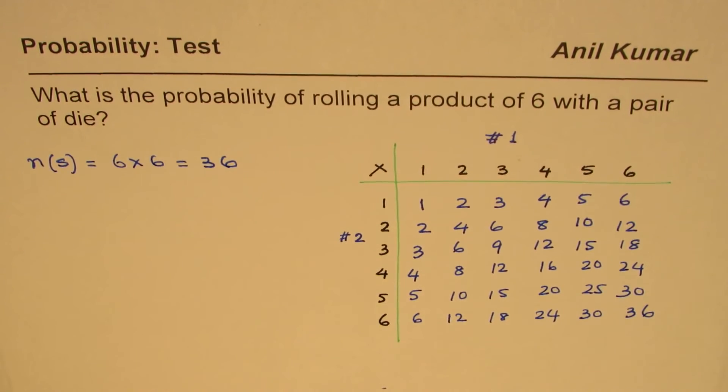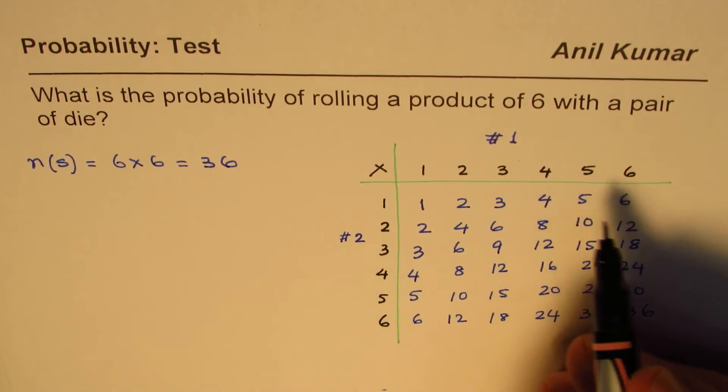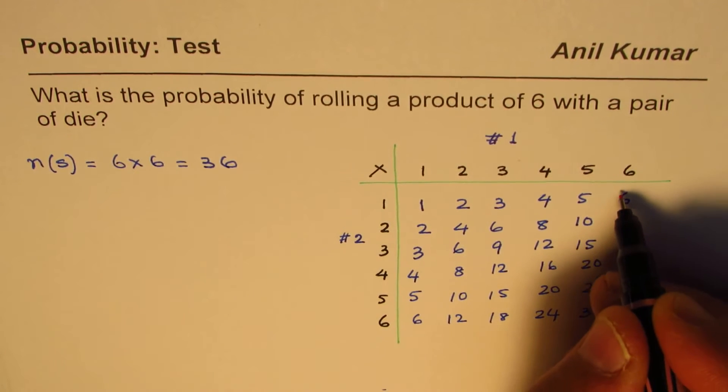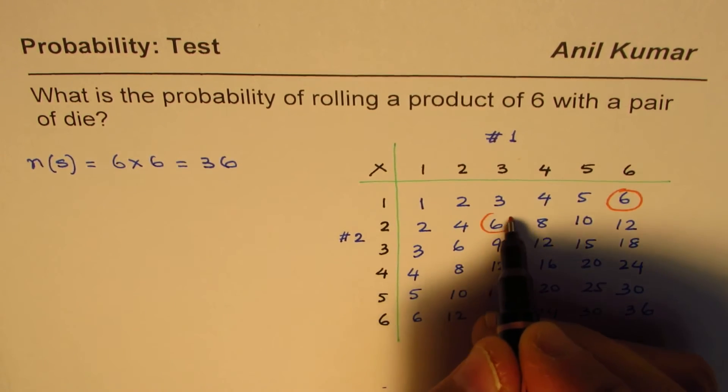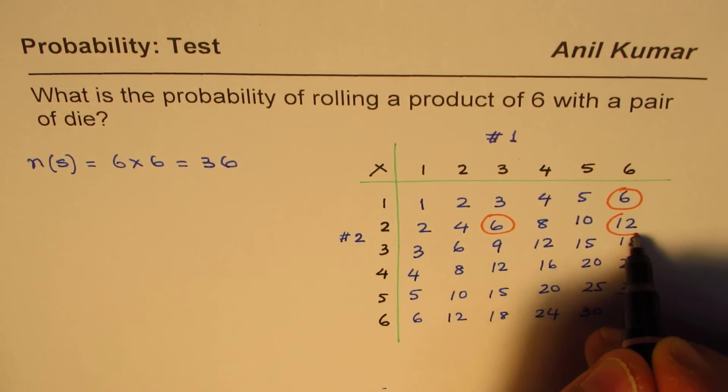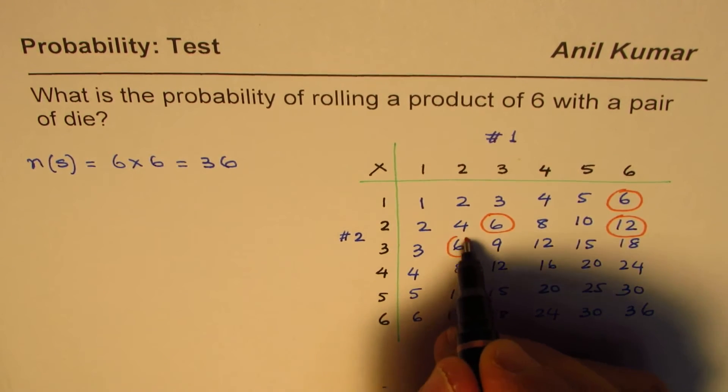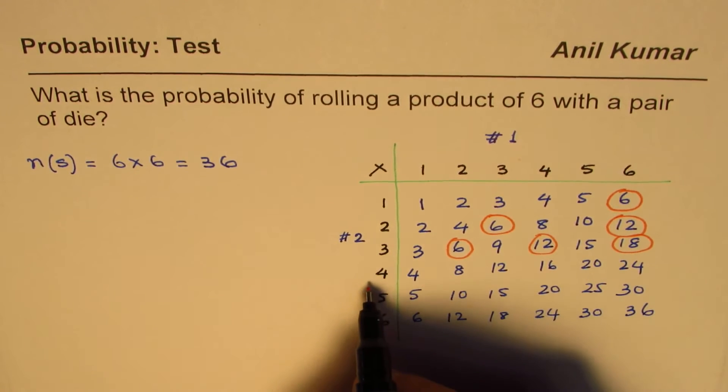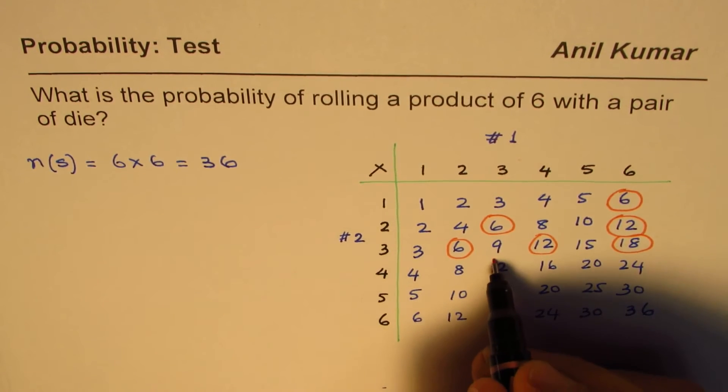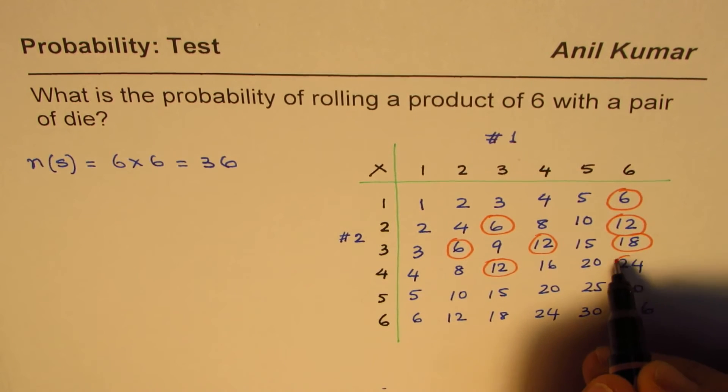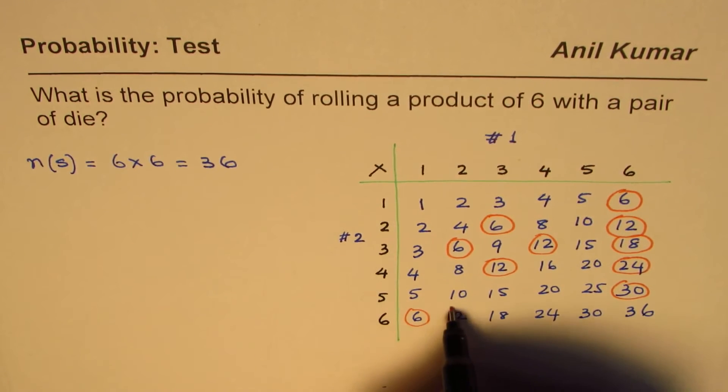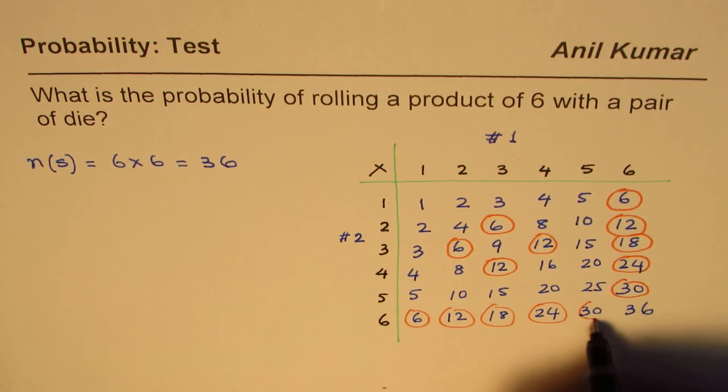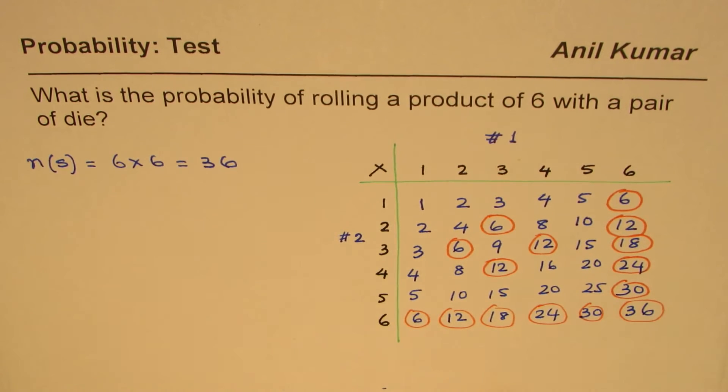Those are the total number of elements. Out of which, how many are products of six? In the first row we have got one product of six. In the second, we have two times three as six and two times six as 12—two of them. In the third one we have six, 12, and 18. In the fourth one, four times three is 12 and four times six is 24. Here we have five times six as thirty. And in sixth row, all will be multiples of six.